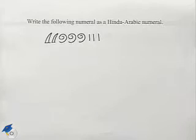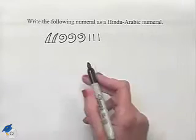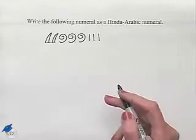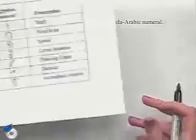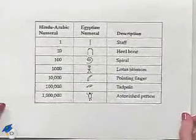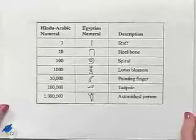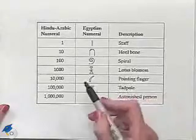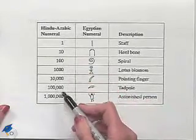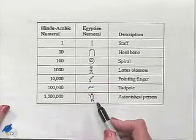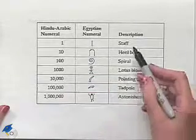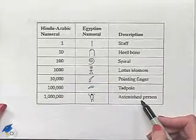Now let's look at a problem dealing with the Egyptian numeration system: write the following numeral as a Hindu-Arabic numeral. We have a number of symbols, and we're going to use a chart — you can refer to this in your textbook — to see what the symbols mean. We notice that we have our Hindu-Arabic numerals in the first column, the Egyptian numerals in the second, and then a description of those Egyptian numerals to the right.